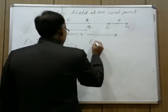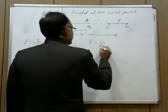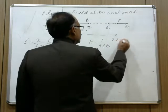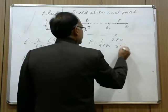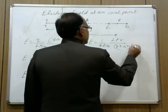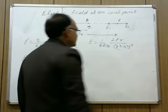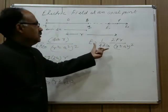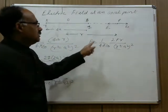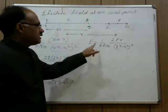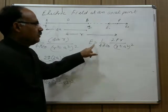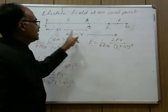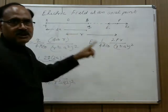Therefore E equals 1 upon 4 pi epsilon naught times 2pr upon (r squared minus a squared) whole squared. This is the general formula without approximation — the electric field at an axial point of the electric dipole at point P, at distance r from the center of the dipole.